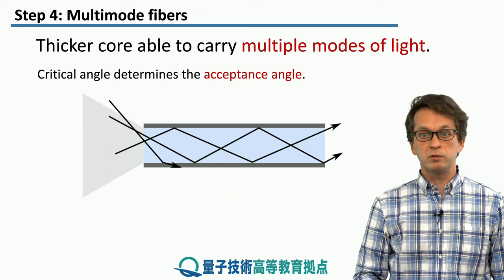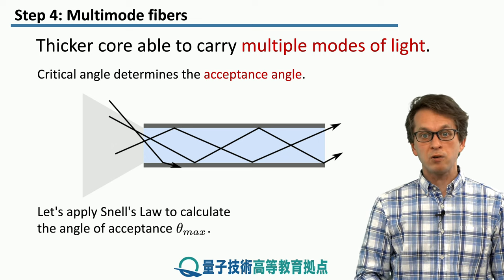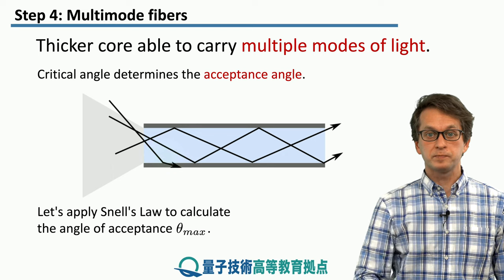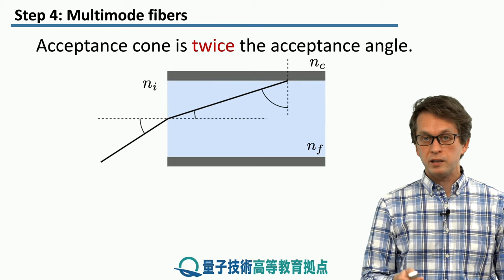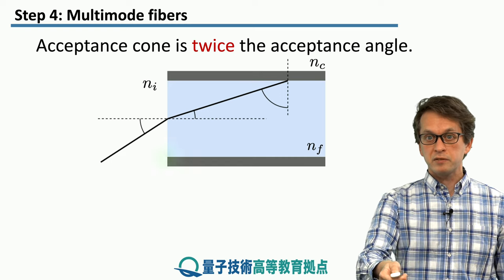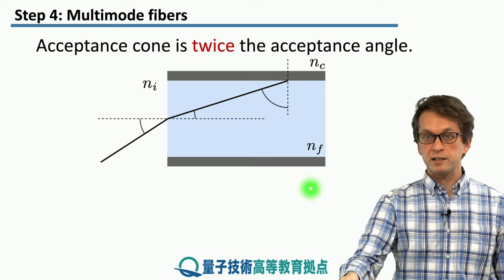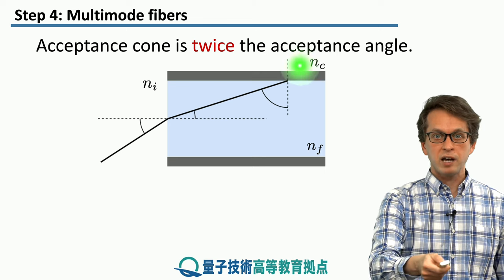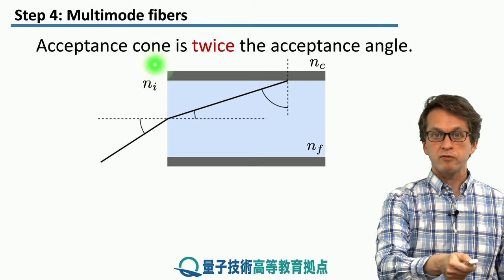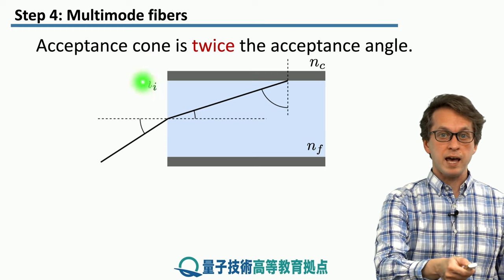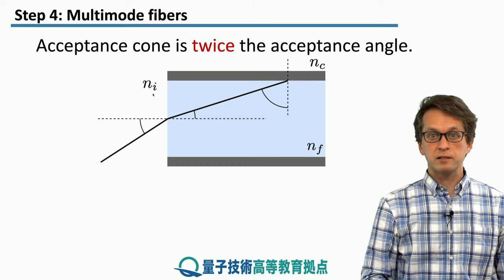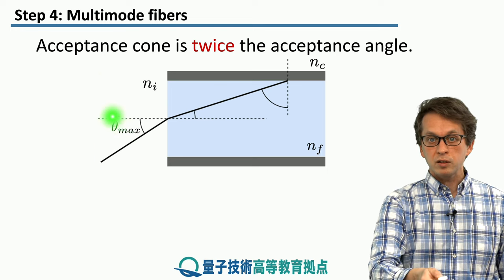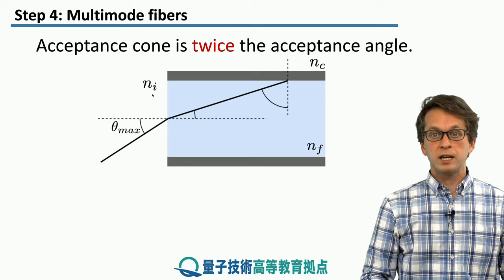So it will not be coupled to the fiber. Let's apply Snell's Law and calculate the maximum permitted angle to couple to the fiber. We have two interfaces: one between the fiber with refractive index NF and the cladding with refractive index NC, and we also consider the refractive index NI of the material outside the fiber. We're looking for theta_max — the maximum permitted angle — and if we multiply it by two, this is called the acceptance angle.